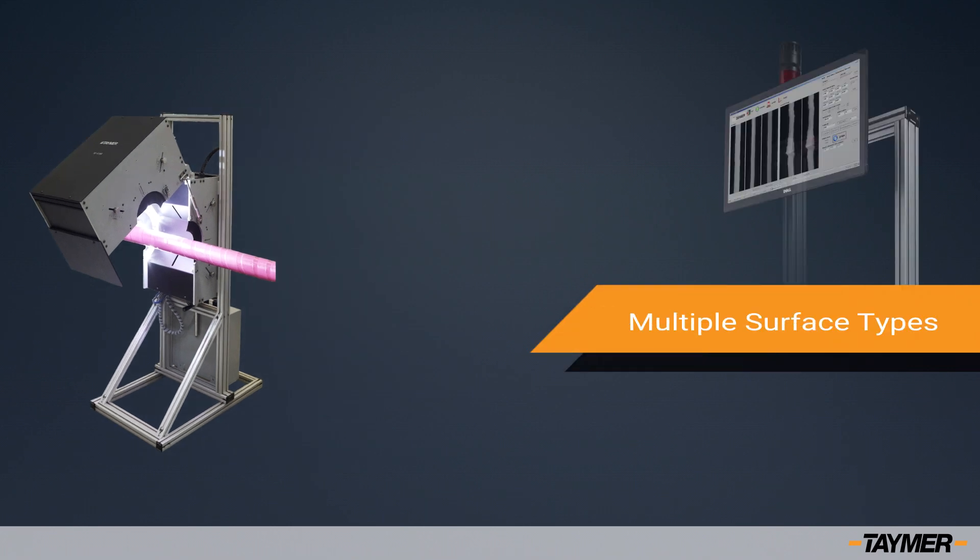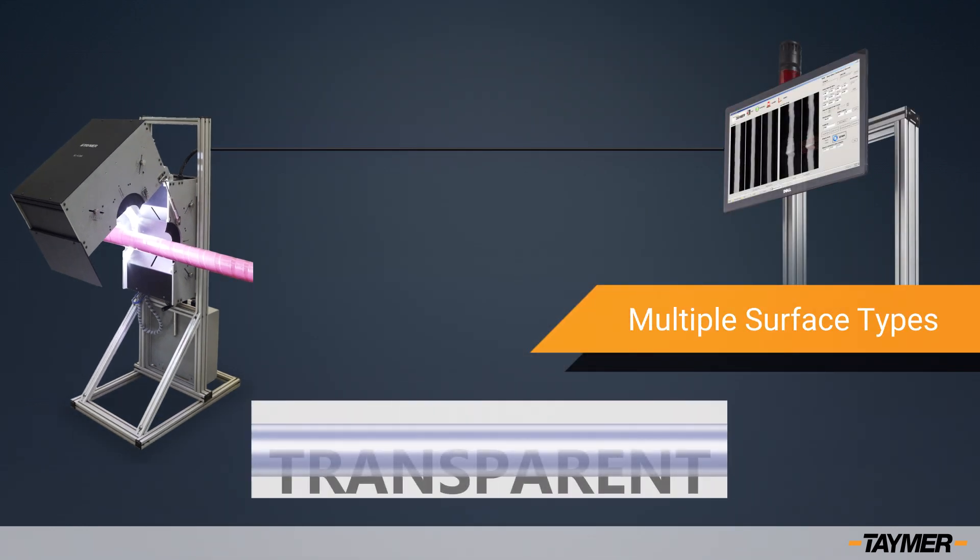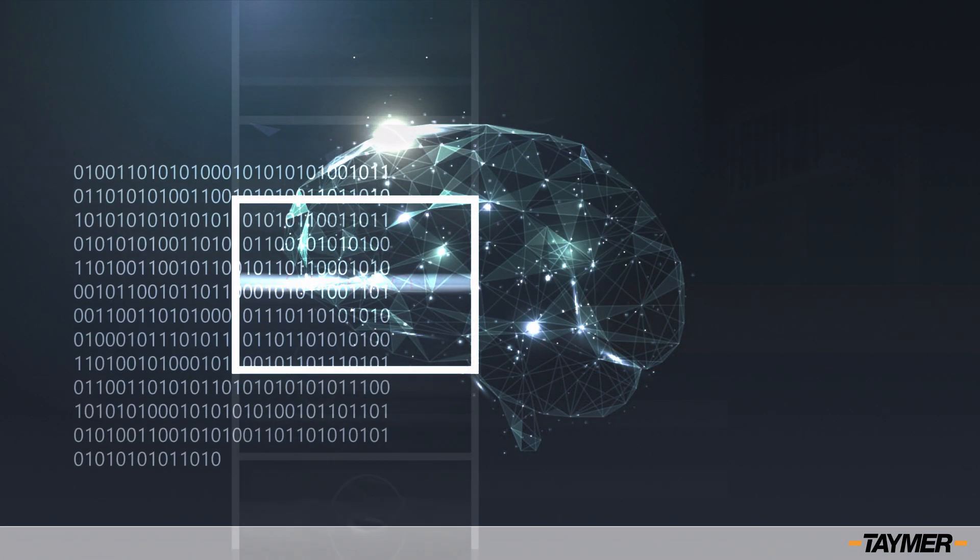Taymer surface inspection machines will adapt and learn from any defect on a multitude of surface types and finishes, including multicolored, transparent, glossy, and braided.